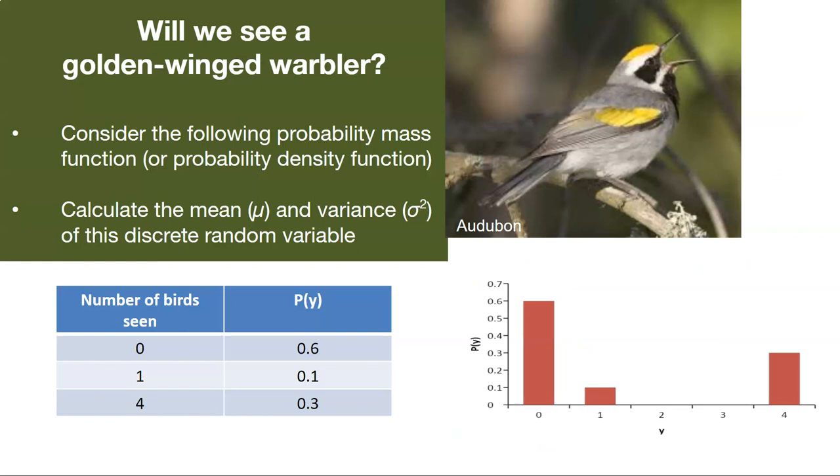As an example, we'll start with a golden-winged warbler. Now this is a bird species that's found in the northern United States, but it's also a very significant concern because this population has been declining in a number of recent years. So we've got a small data set here where we're going to look at the probability and calculate the mean and variance for this discrete random variable.